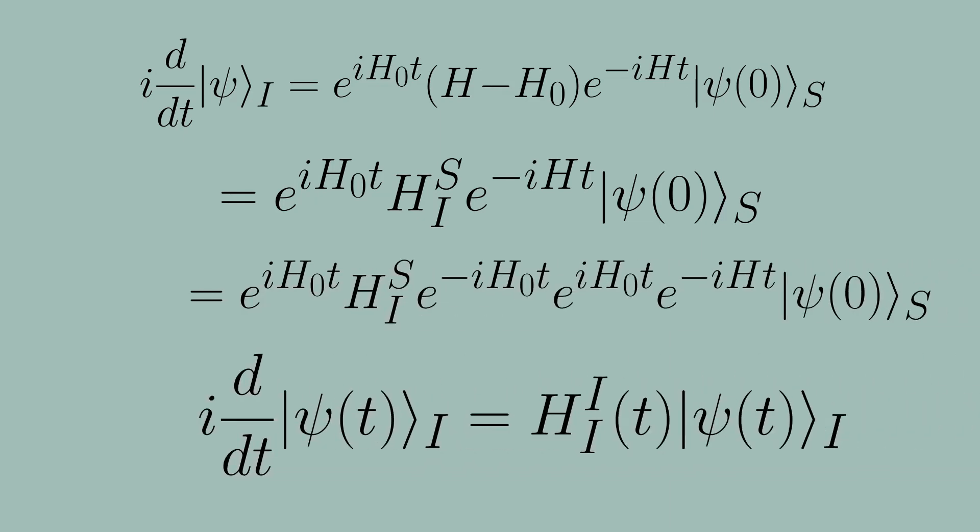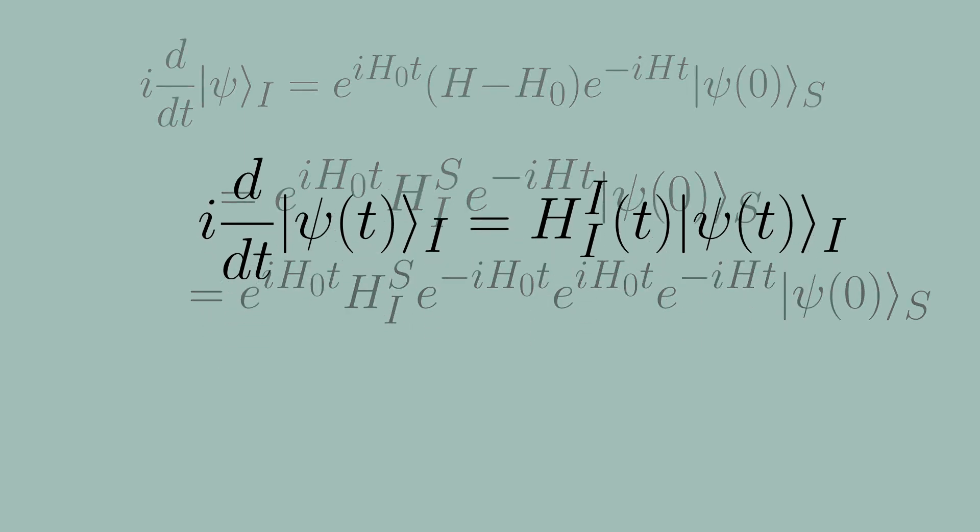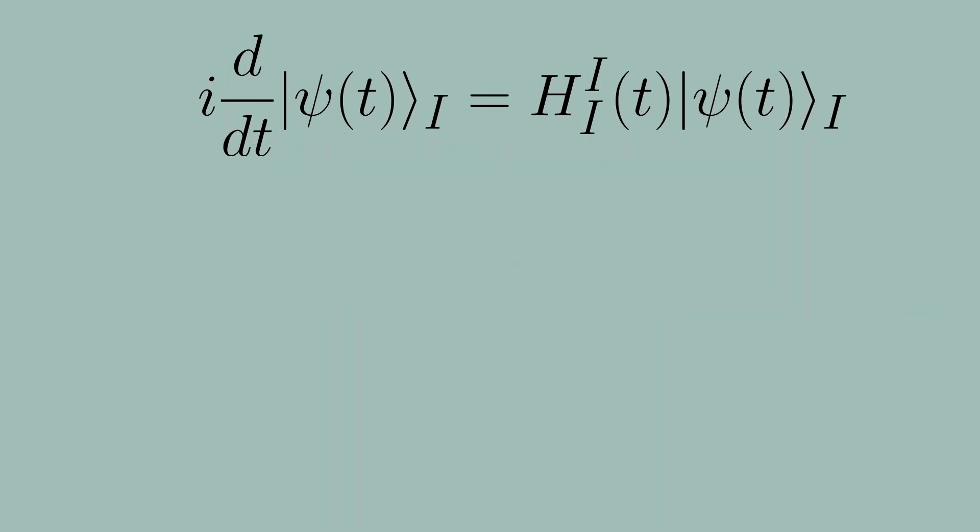Here, the interacting Hamiltonian from the interaction picture is time-dependent, and it is given by the following equation. We could solve this equation to see that the time evolution of our state is written in terms of a time-ordered integral of the interacting Hamiltonian. We time-order this because we can't guarantee that the interacting Hamiltonian will commute with itself at different times.